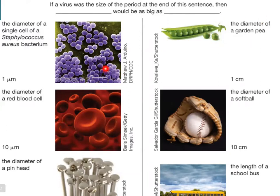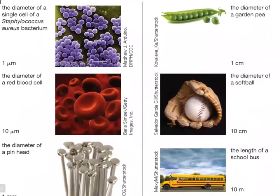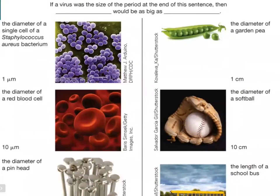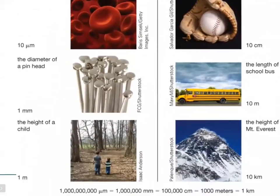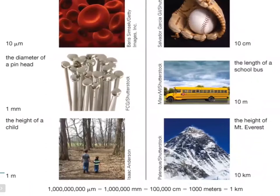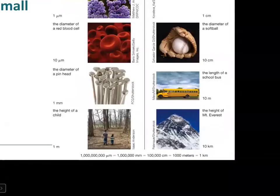Now for a red blood cell — your own red blood cells — if the virus is the size of this small period, it's the size of a softball. That's your red blood cells in terms of range analogy. And then if you have the diameter of a pin head — the pins that you use to tack on your corkboard — if the virus is the size of this period, the pin head will be as large as a school bus or the height of a child. For a virus, it's as high as Mount Everest. So basically that's how small they are.